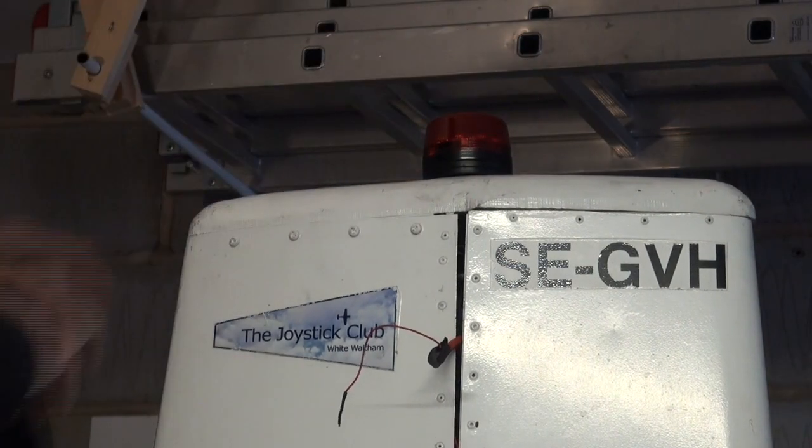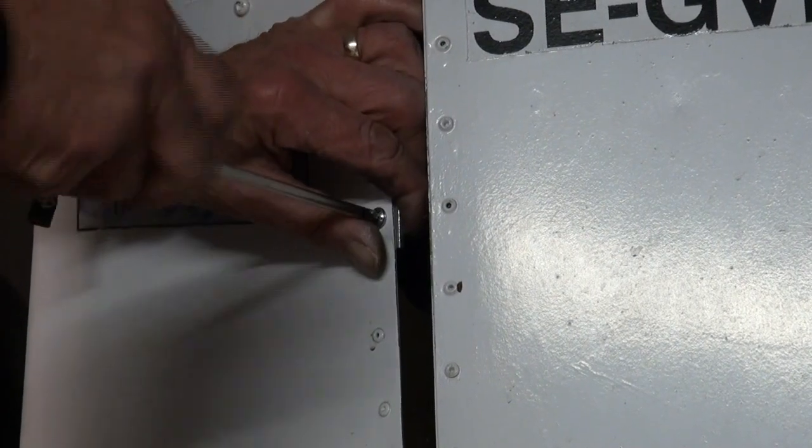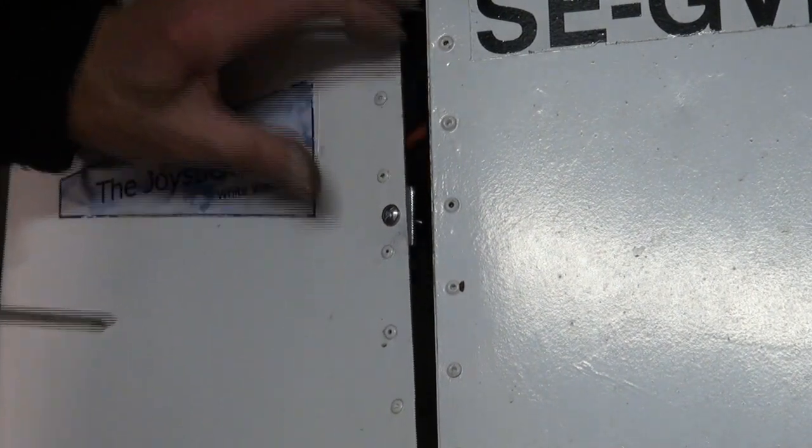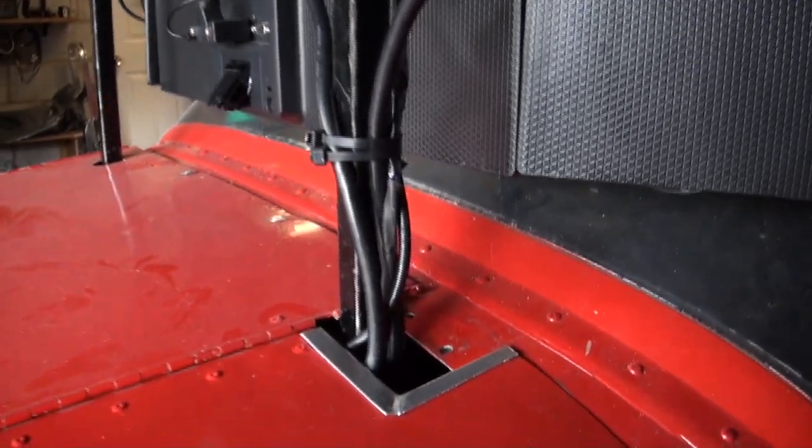Sometime during the year, the anti-collision lamp failed, so that's been replaced with a red one. The wiring has been ruggedized with a nice cable clamp, and we've mitigated the sharp edges around the VDU cable entry.